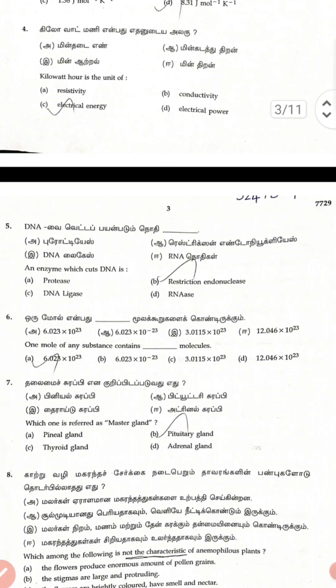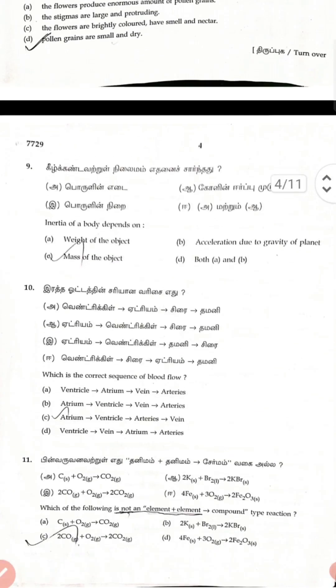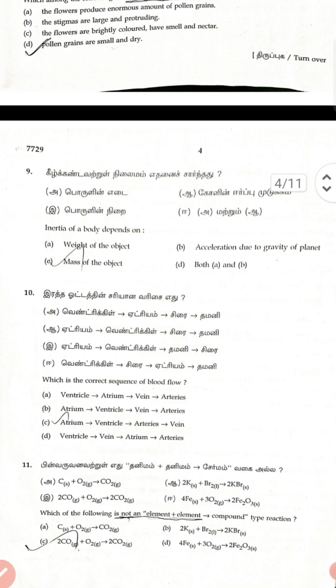The fifth is Extraction of Endosperm. The sixth is Avogadro's Number. The seventh is Pituitary Gland. The eighth is D. The ninth is Pollen Grain. The tenth is Mass of the Object, and answer C.